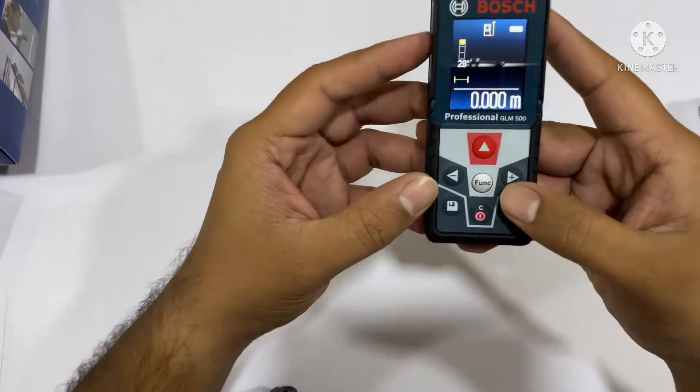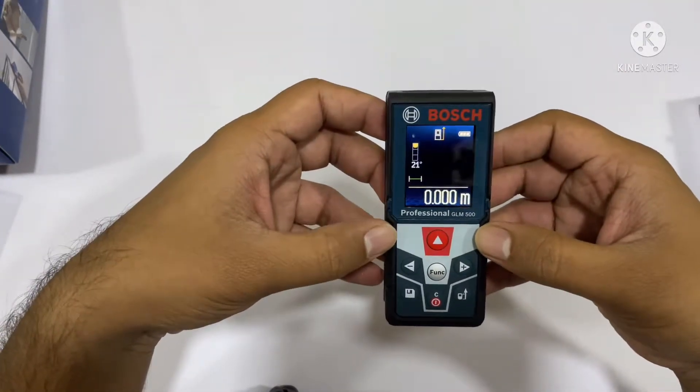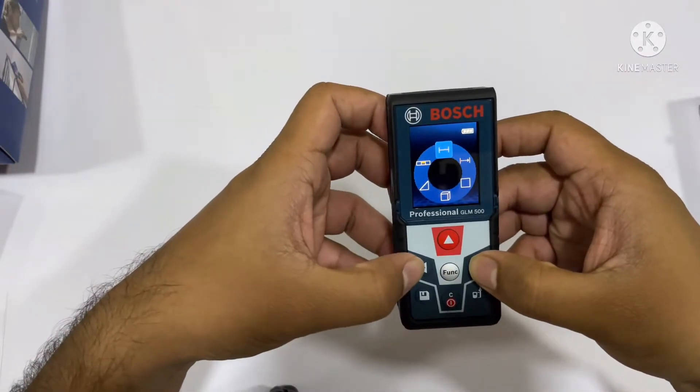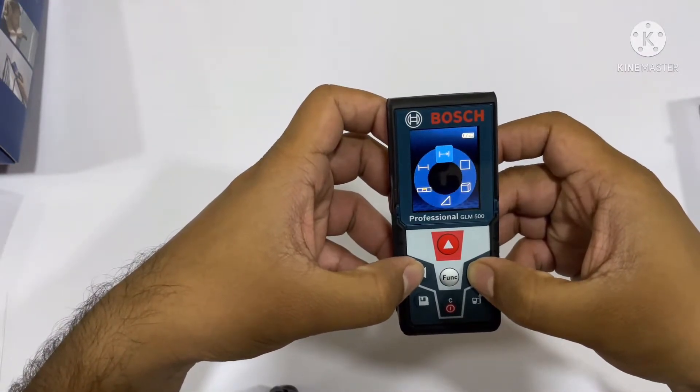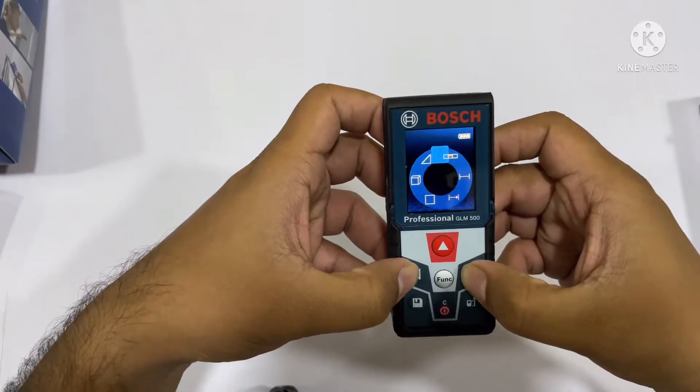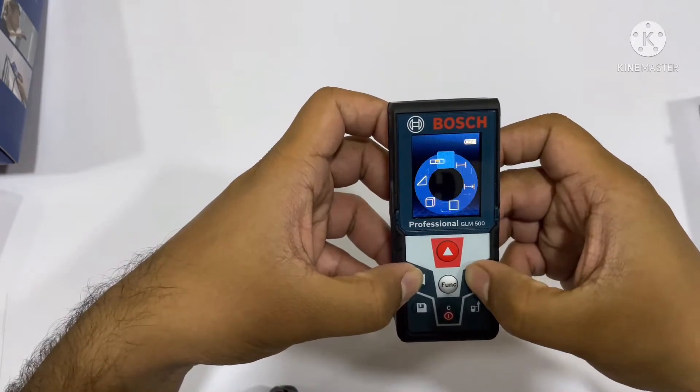This device is having a color display and you can change the functionality to point to point, to the line segment, to the area, to the volume, angle, level. These all are the different functionalities the device is coming with.